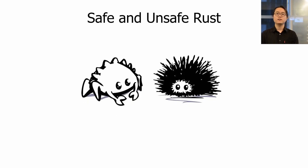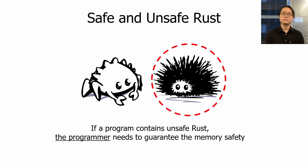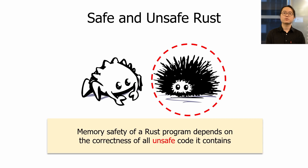Rust consists of two parts: safe Rust and unsafe Rust. When a program is written entirely in safe Rust, the Rust compiler automatically guarantees the memory safety of the program. On the other hand, Rust allows programmers to perform certain low-level operations that are not guaranteed to be safe with unsafe Rust. In this case, the programmer must guarantee the absence of memory safety bugs. In other words, memory safety of a Rust program depends on the correctness of all unsafe code it contains.